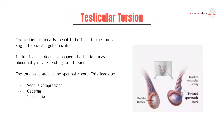So what is testicular torsion? As I mentioned earlier, the testes are fixed to the tunica vaginalis through the gubernaculum. If the fixation does not happen, it leads to the testicles being mobile, which means they're free to rotate. And this rotation can often lead to a torsion. This torsion happens around the spermatic cord, and that leads to blocking the contents of the spermatic cord.